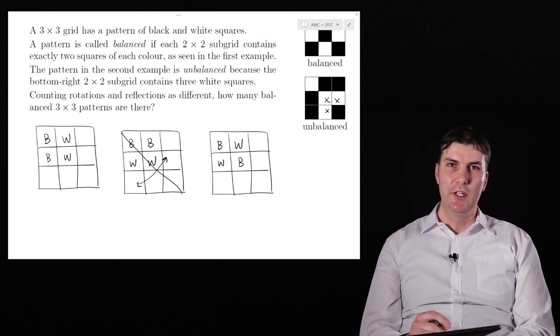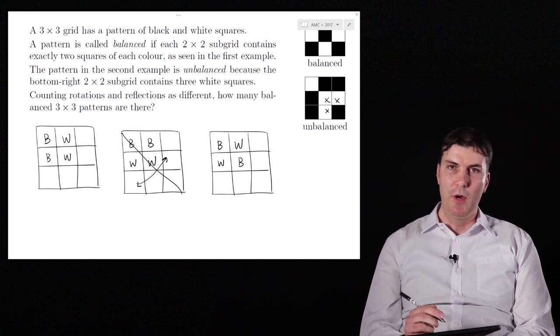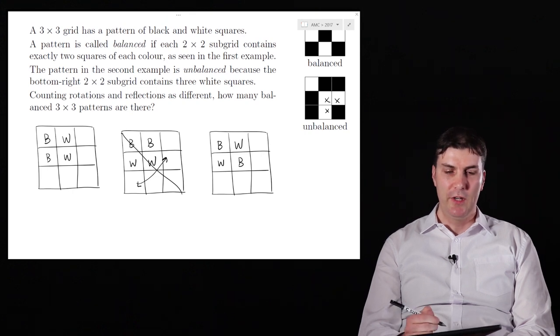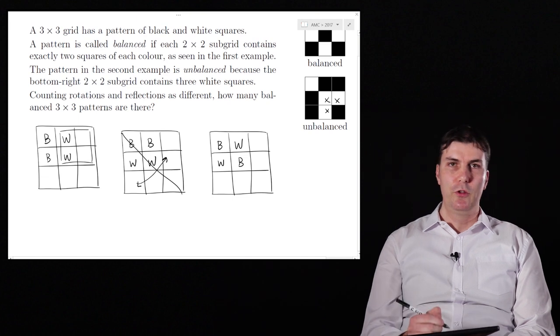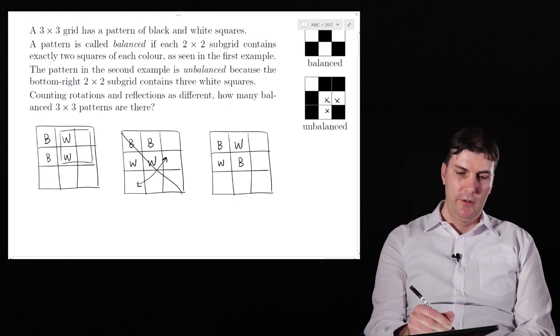Anyone who's done Sudoku will know that sometimes you need to give yourself some options for what you might need to put in place, and we're going to use that strategy here. But if we start with the top right hand corner, we notice that there are two whites in that square already, so we've got no choice but to put two blacks in those places there.